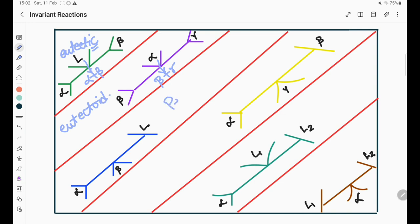The third one is peritectic, in which alpha plus liquid gives beta on cooling.